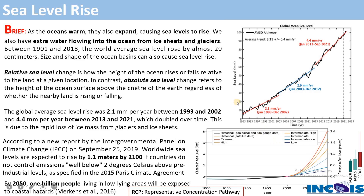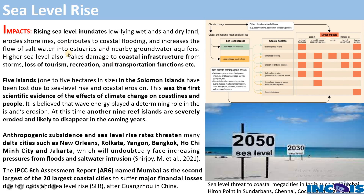Sea level rise has many devastating effects. It inundates low-lying wetlands and dry land, erodes shorelines, contributes to coastal flooding, and increases the flow of salt into nearby estuaries or groundwater — what we call saltwater intrusion. It also causes coastal damage to infrastructure from floods and affects tourism, recreation, and transportation functions. We must study how to control and adapt to these consequences.